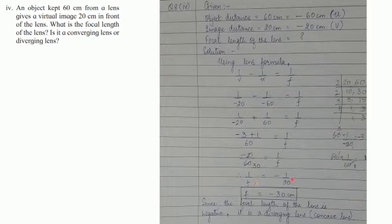The focal length comes out to be minus 1 upon 30. We take the reciprocal F is equal to minus 30 centimeters. Now, we have got the focal length to be minus 30.